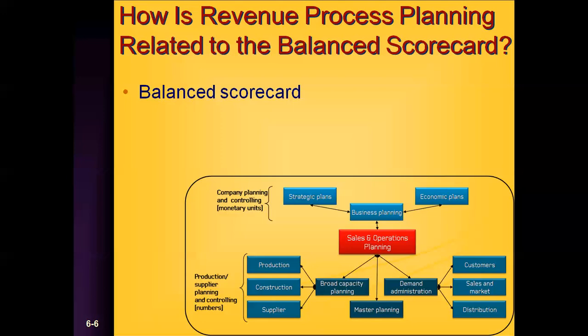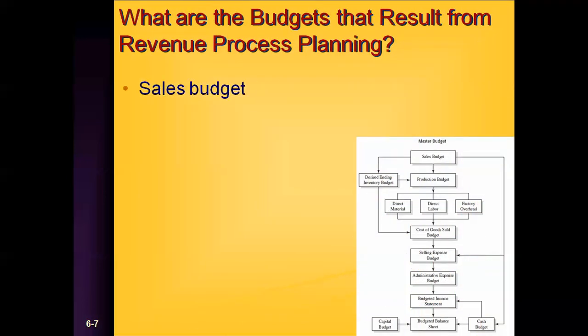You were doing your financial statements on an accrual basis versus a cash basis. Your income statement looked very different than your cash flow because you were buying items on credit with a net 45-day payment term. That balanced scorecard approach tying to the revenue process planning area was very much what you did in the business planning process and is very much what you do in the budgeting planning process for revenue. Let's talk about the sales budget and the cash receipts budget.